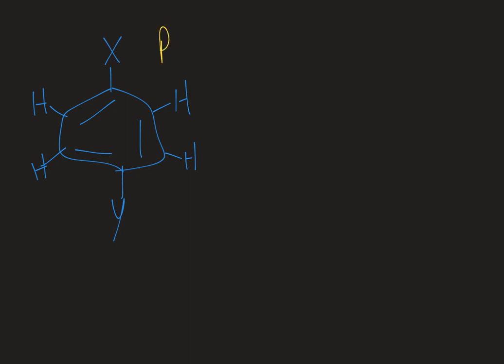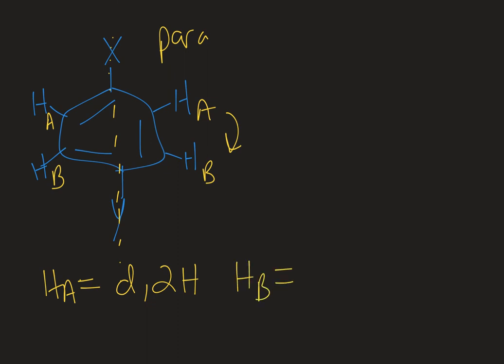So this substitution pattern where the two groups are opposite one another is called a para-substitution. And in this case, I do have symmetry. I have a line of symmetry right down the middle of the molecule. So I'm actually only going to get two signals for a para-substituted compound. So HA's and HB's. HA is going to be a doublet because it has one neighbor, HB. Each HA has one neighbor, but there are two of them. So the integration would be 2H. HB, you're going to get, again, a doublet with an integration of 2H. So in this instance, you have four protons, but only two signals because of the symmetry.